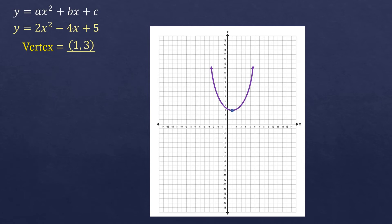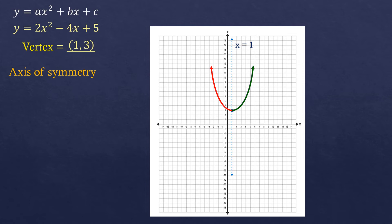Now let's determine the axis of symmetry. Observe that the graph has a twin graph mirroring each other — one going to the left and the other to the right, connected at the vertex. They mirror through the line at x equals 1. If you fold them, they are exactly the same. This line that divides the graph in half is the axis of symmetry. The axis of symmetry of this graph is x equals 1.